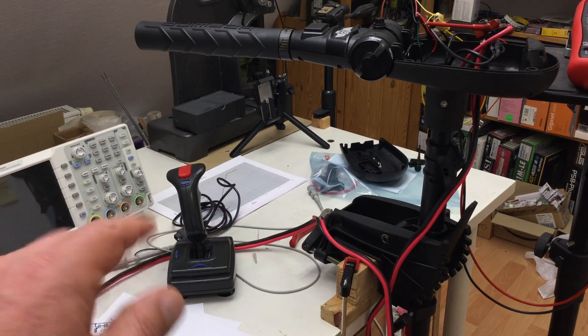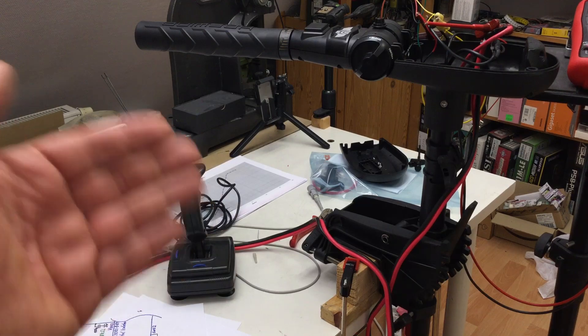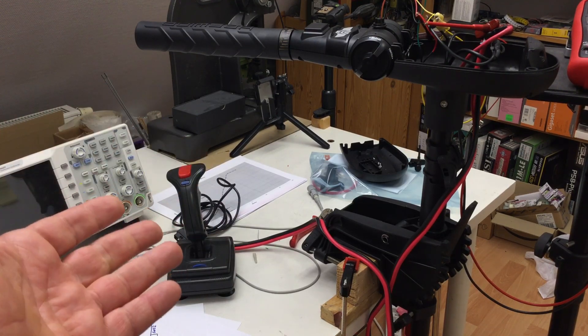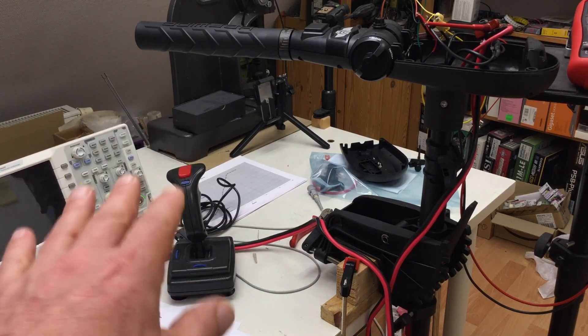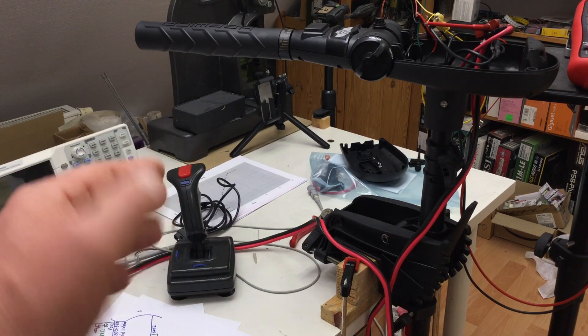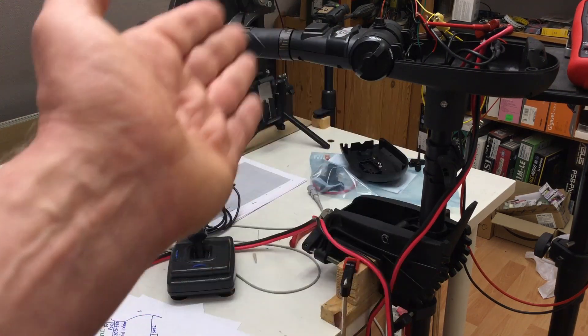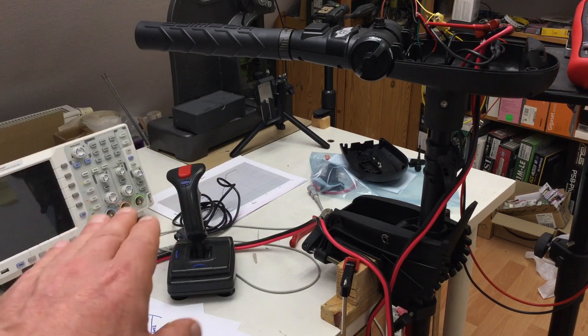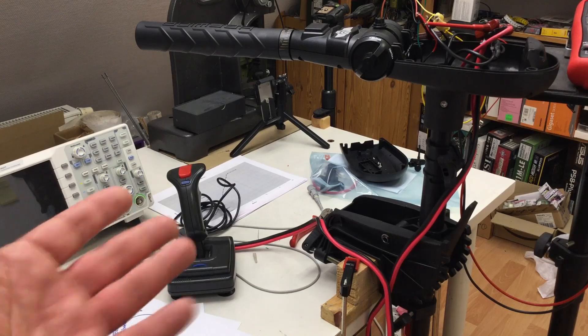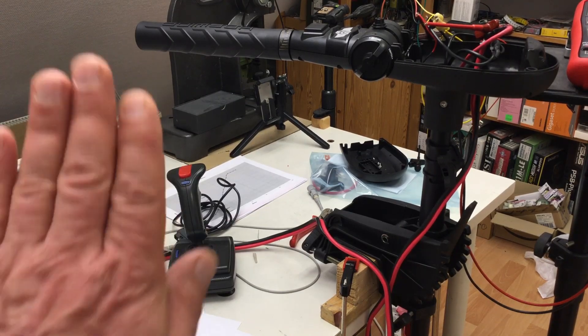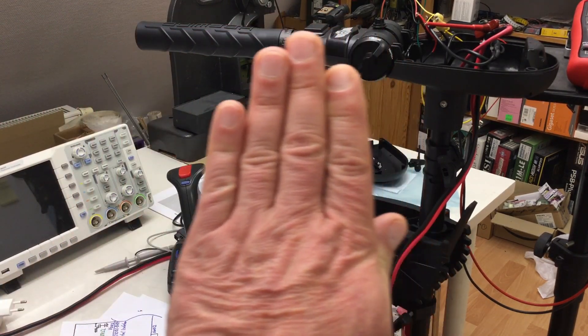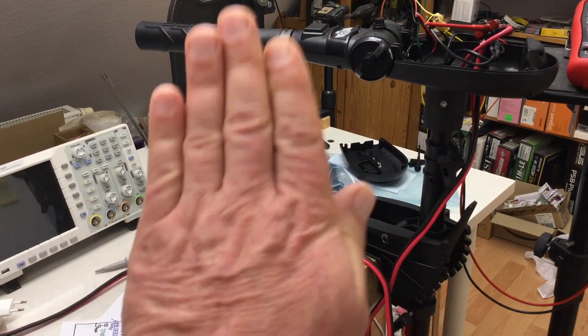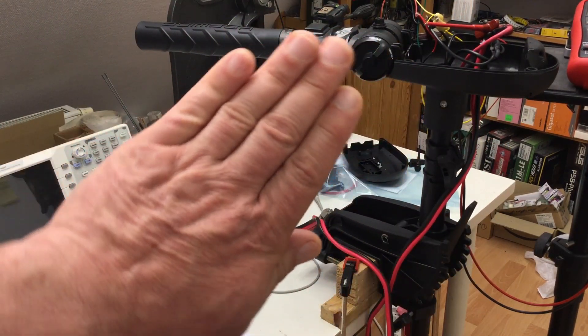The real fun starts when you replace those conventional controls by a joystick, preferably one with three axes. So you no longer tell via a wheel and throttle the outboards what to do, but you tell the joystick what you want the boat to do. For example, you could tell your boat to go sideways without turning, or diagonally without turning, or to turn on the spot.